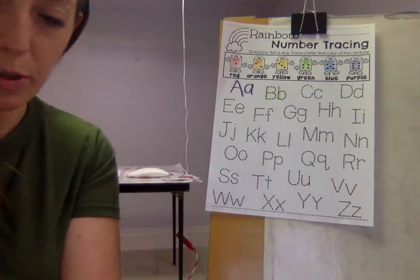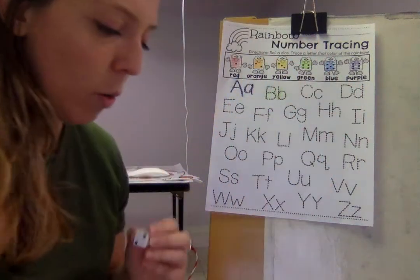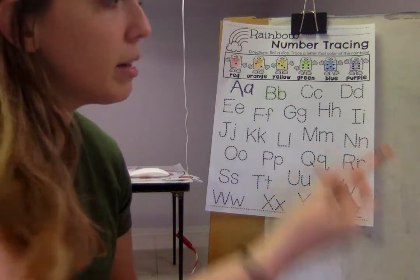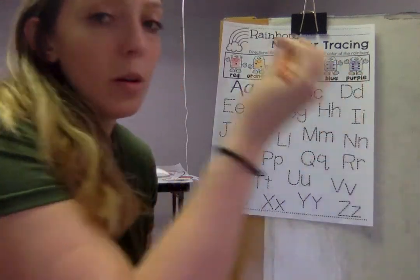So it's kind of like a game. You get to roll your dice. This time I rolled a two. Two was orange. So I'm gonna go to my C and color and trace my letters in orange.